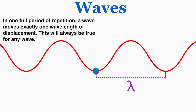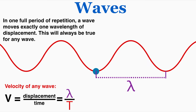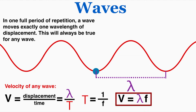This will always be true for any wave: in one full period of repetition, a wave moves exactly one wavelength of displacement. So that means we can come up with a new equation for the velocity of a wave. Velocity is displacement over time, and because the displacement is the wavelength and the time is the period, the velocity of any wave is its wavelength divided by its period. And because period equals 1 over frequency, we can rearrange this to say the velocity of a wave equals its wavelength times its frequency. This is a really important equation for problem solving in this unit.